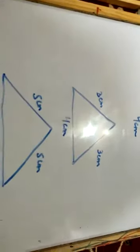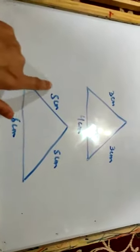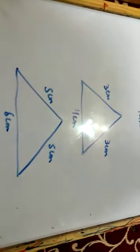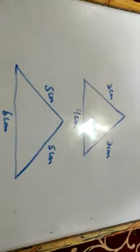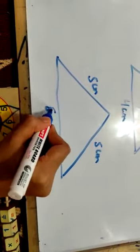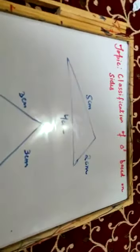If we look at another triangle, one side is 5 cm, another side is also 5 cm.